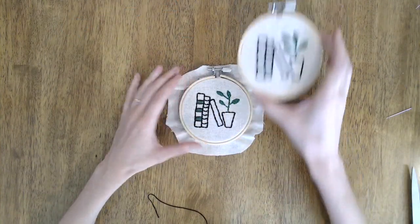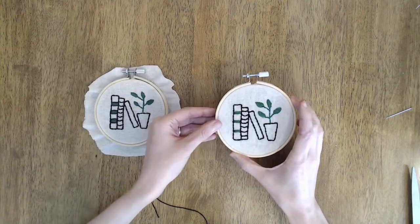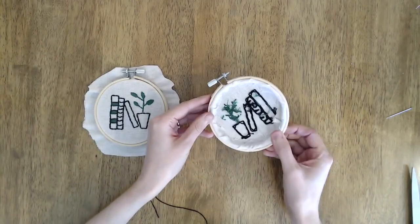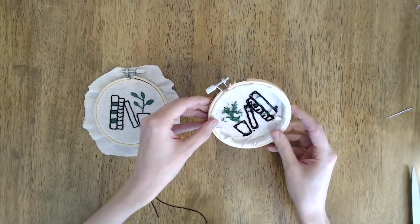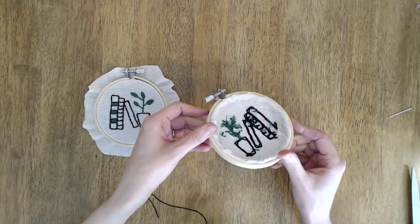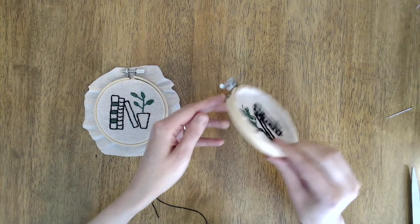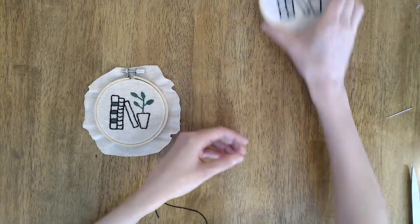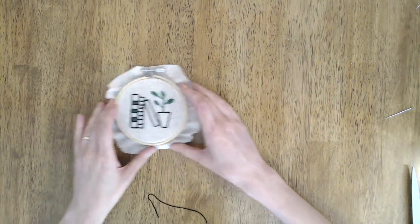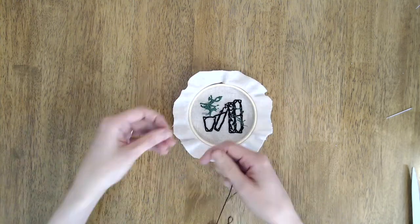When you're all done stitching, you can finish the hoop in a few ways. The easiest way is to do what I've done on the right here, which is to trim the fabric to about a half inch around the edges and then use glue, hot glue or any other kind of craft glue just to stick it to the inner ring of the back side of the hoop.